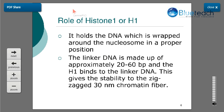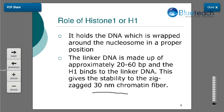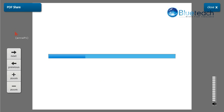The role of histone H1 is to hold the DNA wrapped around the nucleosomes in a proper position. H1 binds to the linker DNA and gives stability to the zigzag 30-nanometer chromatin fiber. This 30-nanometer chromatin fiber is the next organizational level, also called the solenoid fiber, and H1 gives stability to this structure.